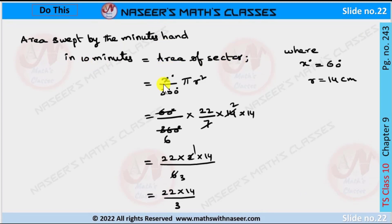We know the formula of area of sector: x degrees by 360 into pi r square. We substitute the r and x values. Then we can write it as 60 by 360 into 22 by 7 into 14 into 14.